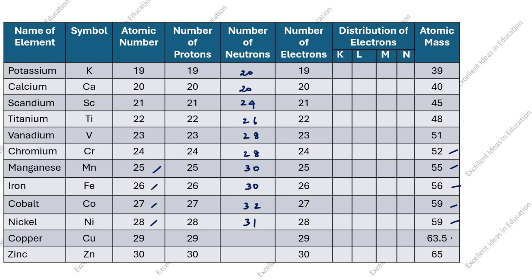Copper: atomic mass 63.5 minus atomic number 29 gives 34.5, but we will write it as 35. Zinc: 65 minus 30 is 35. Thanks for watching this video.